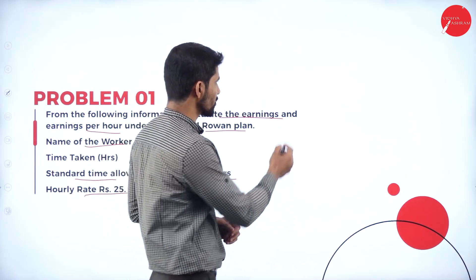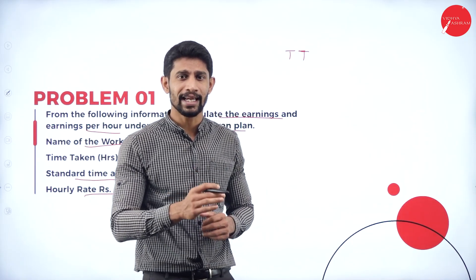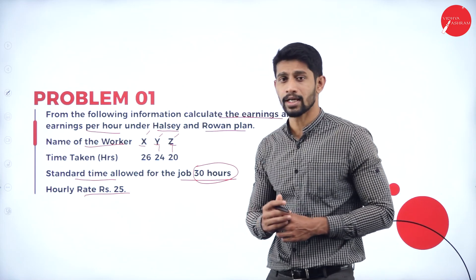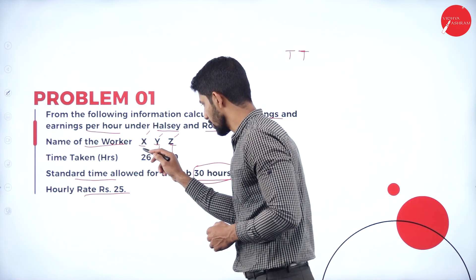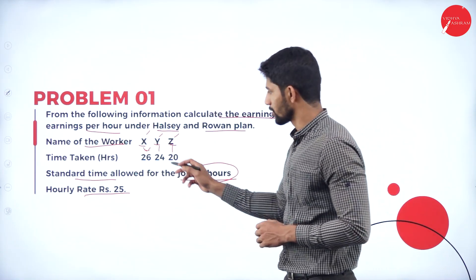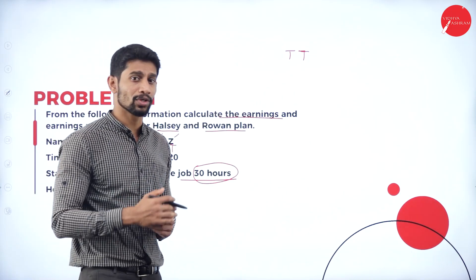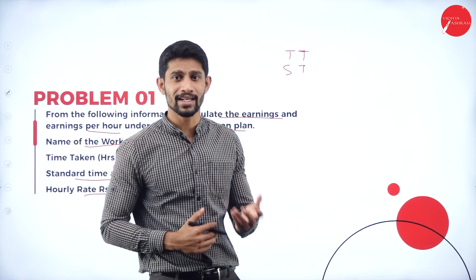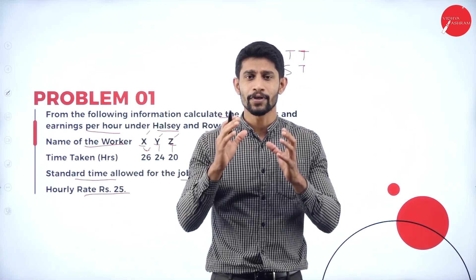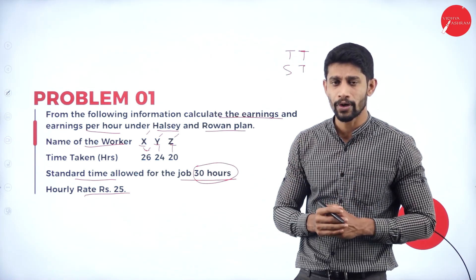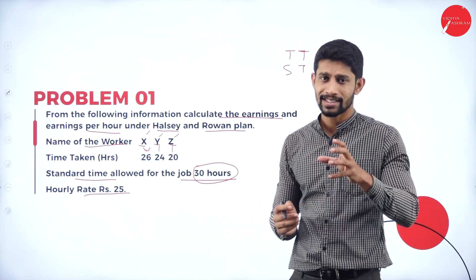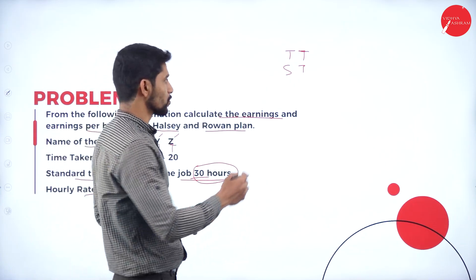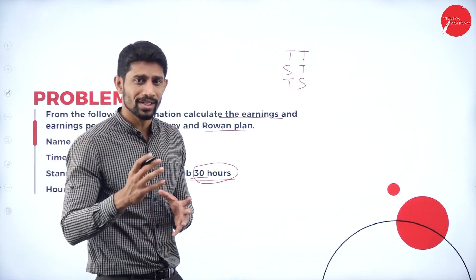The four things you need to know are: first, TT — time taken, which is the actual time taken by the worker to complete the work. For Mr. X, TT is 26 hours. Second, ST — standard time, which is the time fixed by the employer to complete a particular work. Here, the standard time is 30 hours.